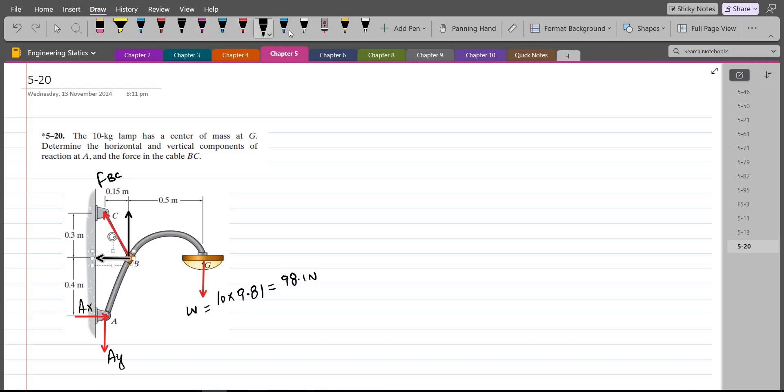So I have one vertical component and one horizontal component. Let's label them. Let's call this angle as theta. So we have this right here would be FBC sin theta and the horizontal component would be FBC cos theta.